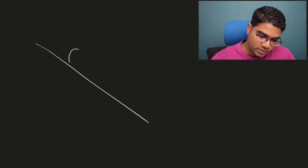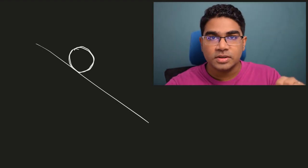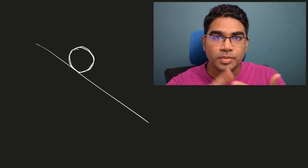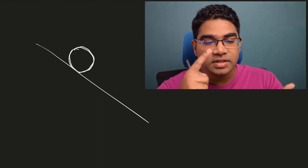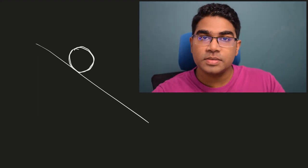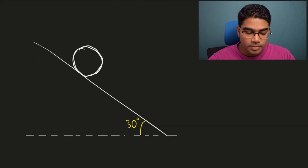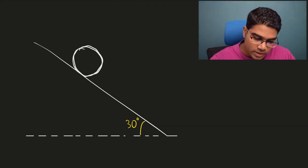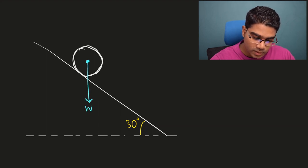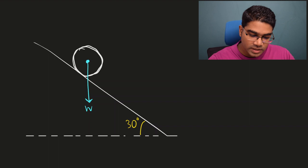Let's look at an object resting on a slope. Since the object is not moving, its velocity is zero, meaning acceleration is zero. Therefore, the resultant force acting on the object is zero, and we can conclude the forces are in equilibrium. We identify all forces: weight W acts downward from the center of mass, the normal reaction R acts perpendicular to the surface, and friction F acts along the slope.